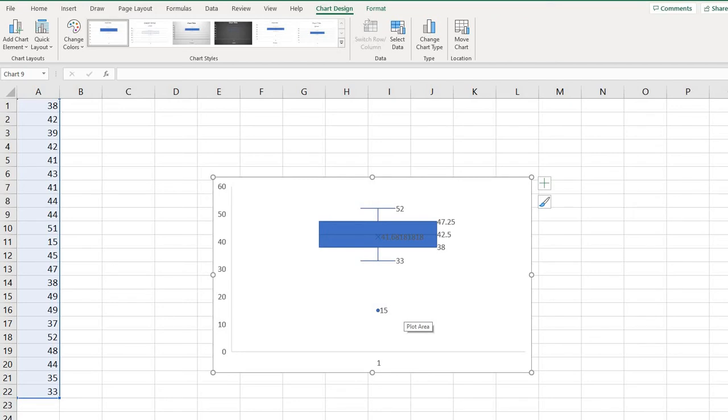And the way to determine if there is an outlier is you would take 1.5 times the IQR, where IQR represents the interquartile range. And to find the IQR, all you would have to do is take your third quartile minus your first quartile.